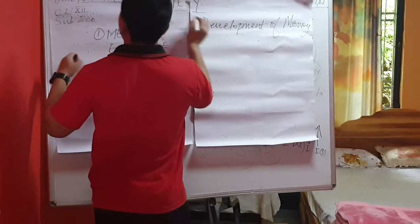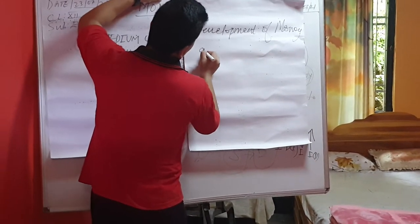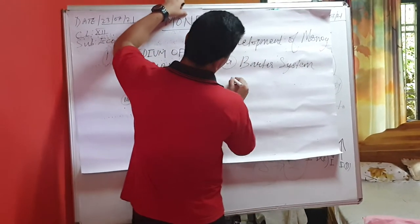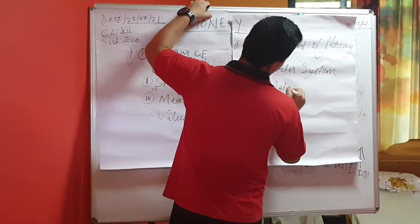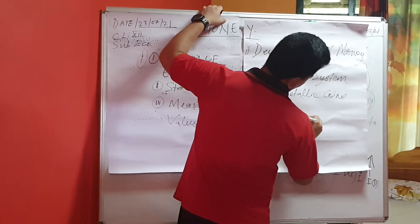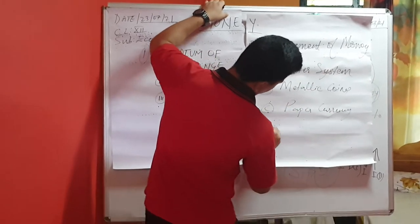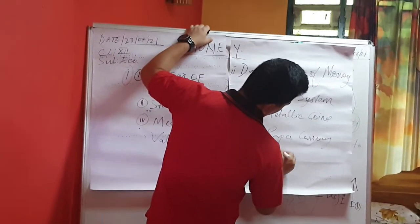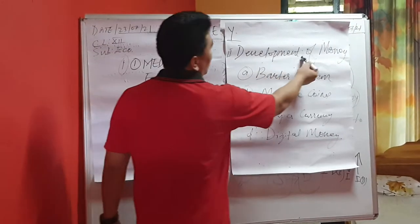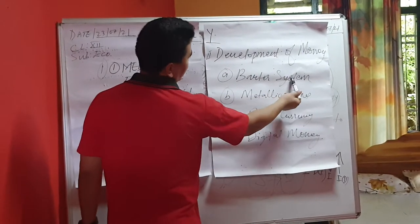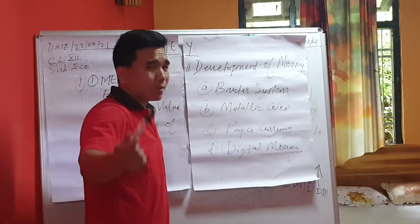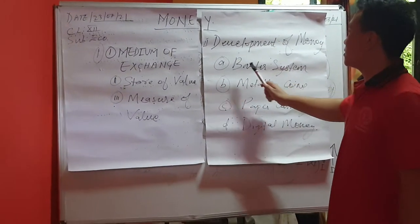Now we will move towards another topic: development of money. At first there was the barter system, and after that metallic coins came, then paper currency, and now digital money has emerged. So the four stages of development of money are: first, barter system; second, metallic coins; third, paper currency; and fourth, digital money. Let's learn them one by one.